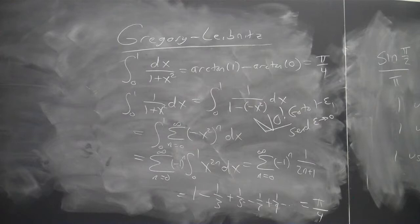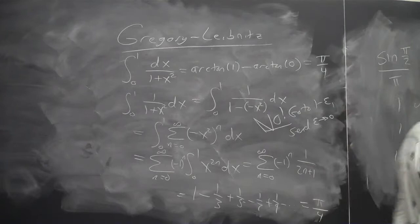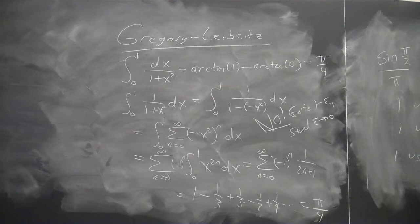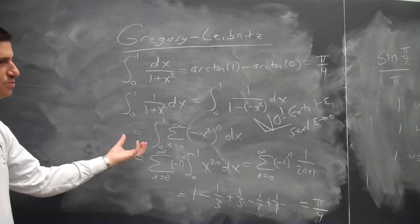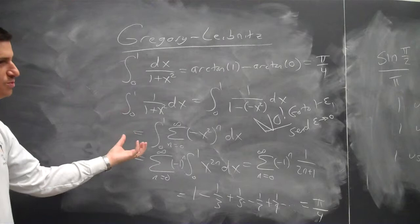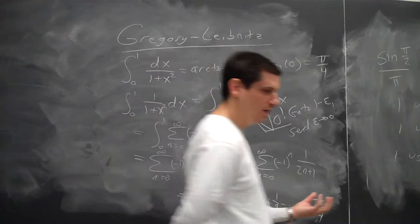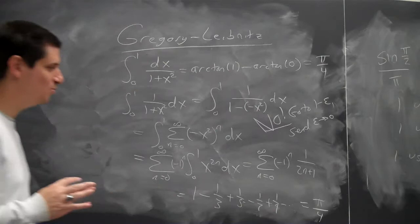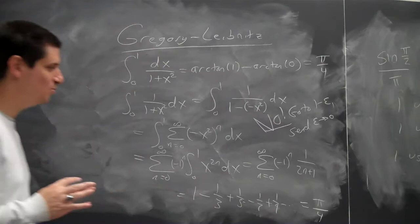So if you ever need to calculate π and don't have a calculator, or only have one that does simple quotients, here is a simple way. Or you could use the Wallis formula. Now, in grad school we sometimes play the game of which formula wins — which one converges faster? The Gregory-Leibniz or the Wallis?